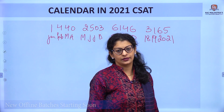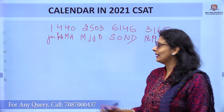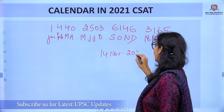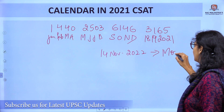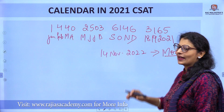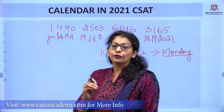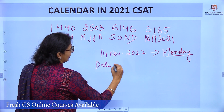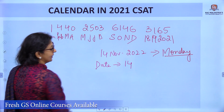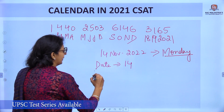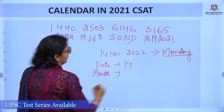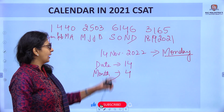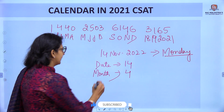Let's verify the method using today's date: 14 November 2022, which we know is Monday. We need to find five things. Starting with: Date is 14. Month is November, so we write the code for November, which is 4.